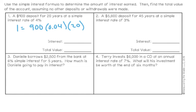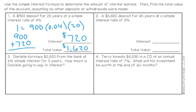Next, we need our rate written as a decimal. The rate is 4%. To change a percent into a decimal, we move our decimal two places to the left — in this case, 0.04. Finally, we need our time in years; for this problem that is 20 years. We multiply 900 times 0.04 times 20 to get an interest of $720. Then we take the original amount deposited and add our interest of $720, giving us a final value of $1,620 in the account.